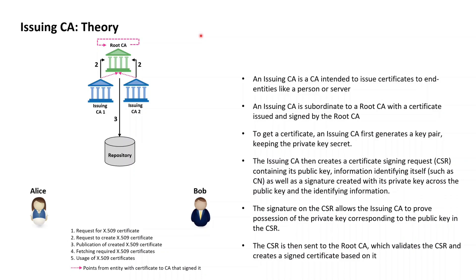After the last lesson, we ended up in the construction of our PKI having constructed a root CA with a self-signed certificate for a public-private 4096-bit RSA key pair. The next step is now the construction of two issuing CAs: one issuing CA serving Alice and a second issuing CA serving Bob.